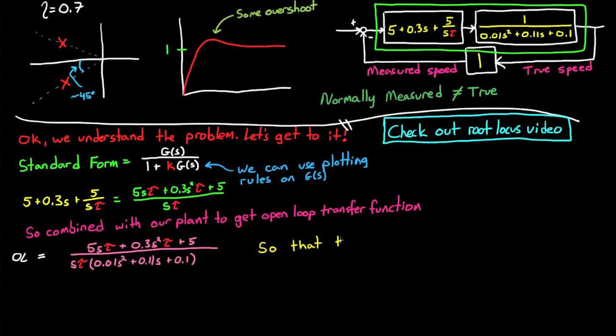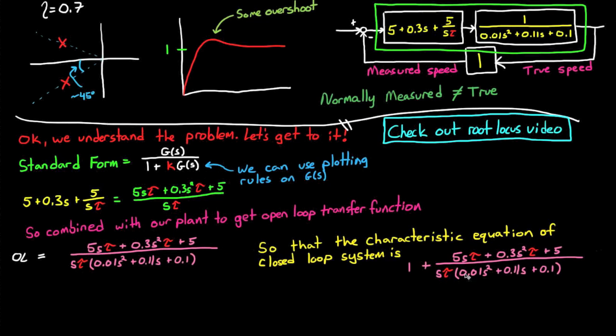And if you recall, for unity feedback systems in the form that we have, the characteristic equation of the closed loop system is 1 plus the open loop transfer function, just like we see in the standard form of the root locus method. However, you can see that our characteristic equation doesn't look like the root locus standard form at all. In the standard form, the variable gain k appears only once, and our variable gain tau is scattered throughout the transfer function.